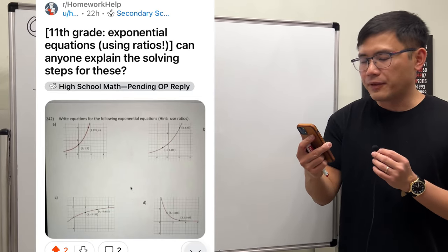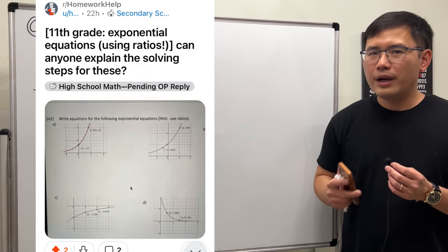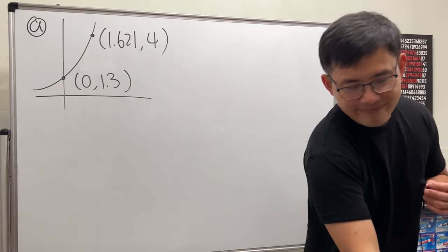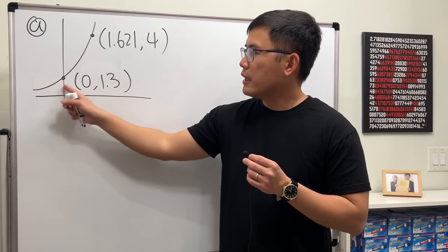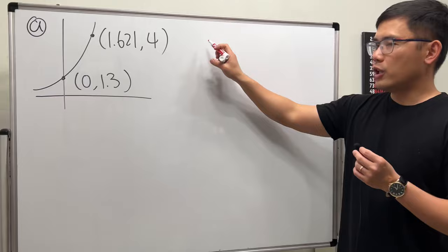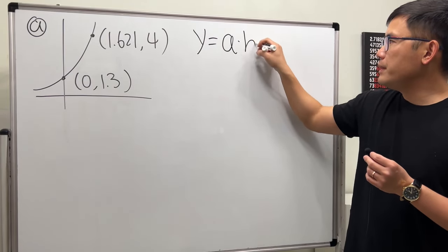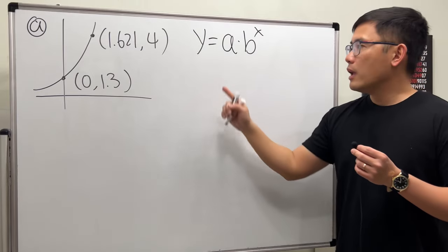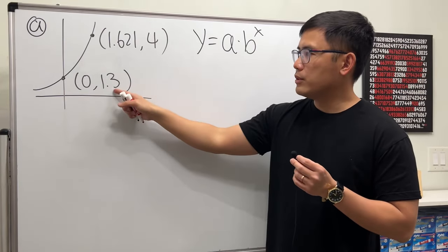Can anyone explain the solving steps for these? Of course, I'm going to do a and c for you and then try b and d on your own. Our goal is to figure out the exponential function that goes through these two points. To do so, we have to use these two points.